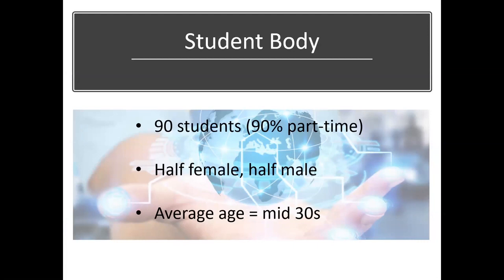We have about 90 students, plus or minus a few depending on whether students are active in any given semester. The large majority of our students are part-time, typically taking two courses a term and working full-time. We do periodically have students taking three courses a term with permission of their advisor, but it's less common because most of our students are working full-time and graduate work is certainly time-consuming above and beyond your nine-to-five job. The student body is split roughly evenly between males and females and our average age is in the mid-30s, ranging probably from the mid-20s to the early 50s.